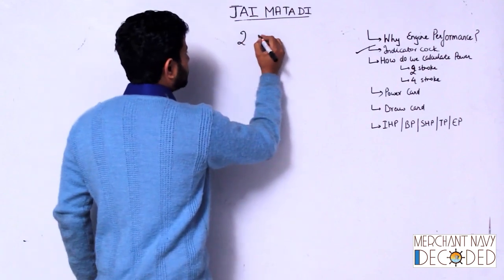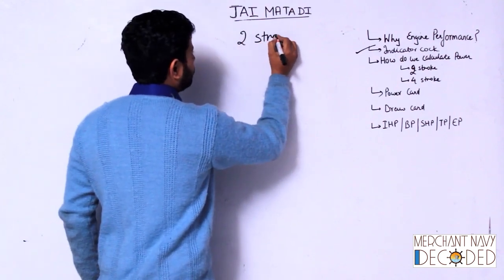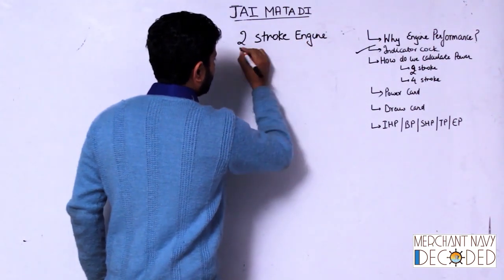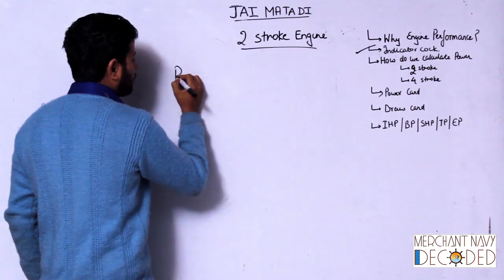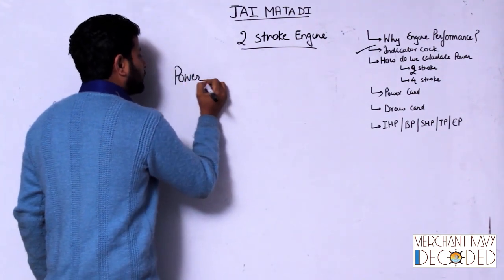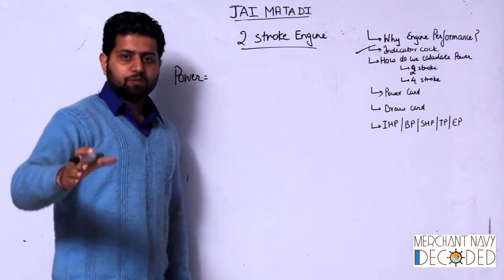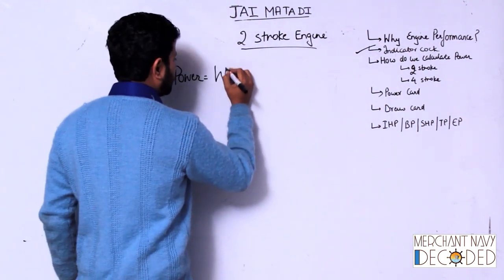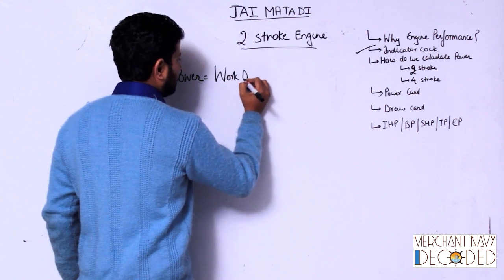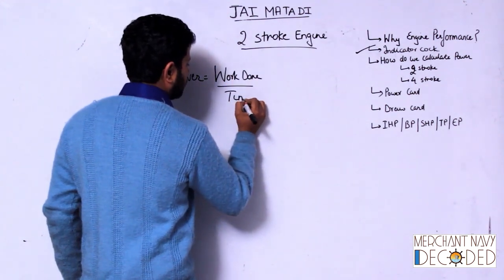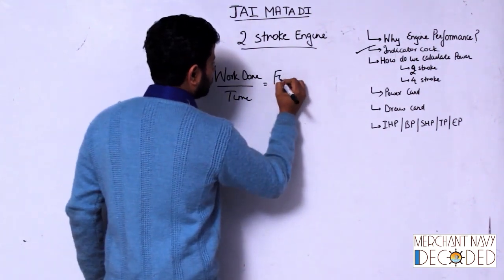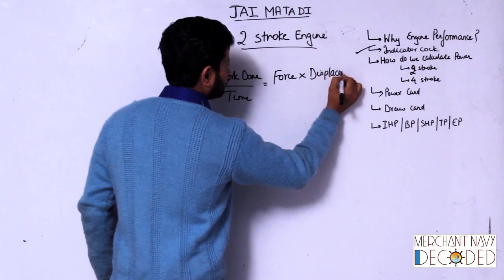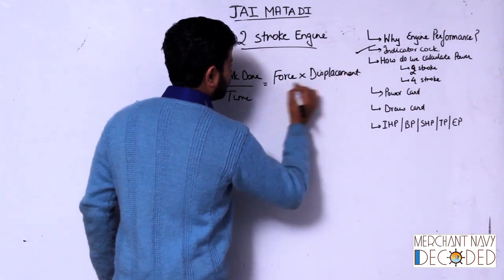Let's calculate power for a two-stroke engine. When I talk about power, before going through this unit, please go through my section on power and atmospheric pressure. Power is work done upon time. Work done is force into displacement upon time.